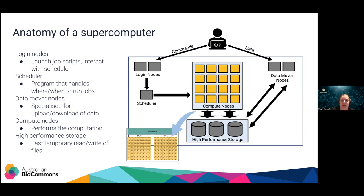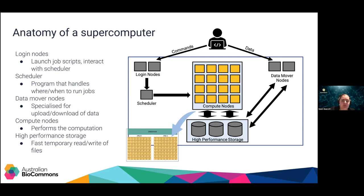The scheduler is the program that handles where and when to run jobs. Because it's a shared resource, you can't just book out the whole thing for yourself — the scheduler will allocate your job in a queue and when your turn comes up, your job gets run. There are also data mover nodes, specialised for upload and download of data — if you want to download sequencing data from a provider, you'd run that on the data mover node for a faster connection. There's also high-performance storage, which is really useful because bioinformatics workflows are often very RAM-hungry.